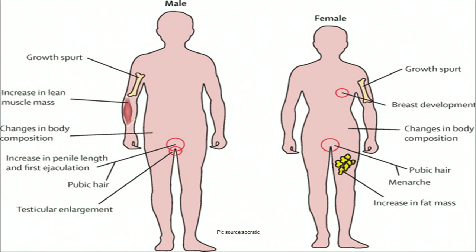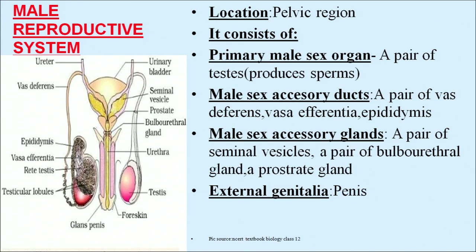The picture shows secondary sexual characters in male and female. In males: growth spurt, increase in lean muscle mass, changes in body composition, increase in penile length, first ejaculation, pubic hair growth, and testicular enlargement. In females: breast development, changes in body composition, pubic hair growth, menarche, and increase in fat mass.